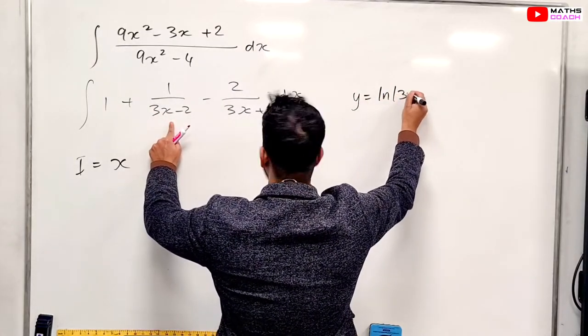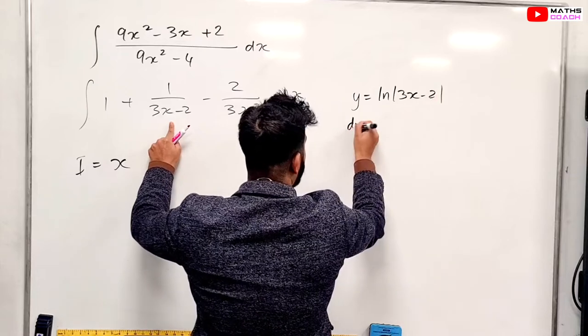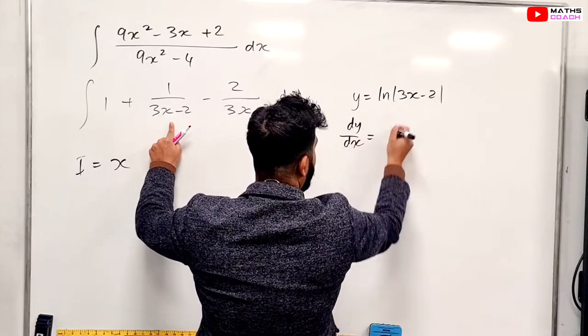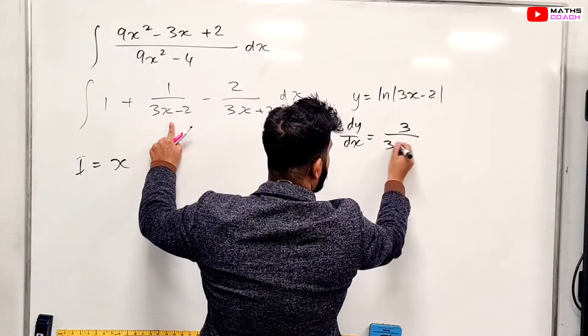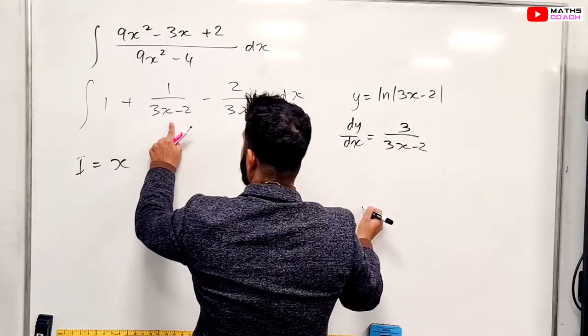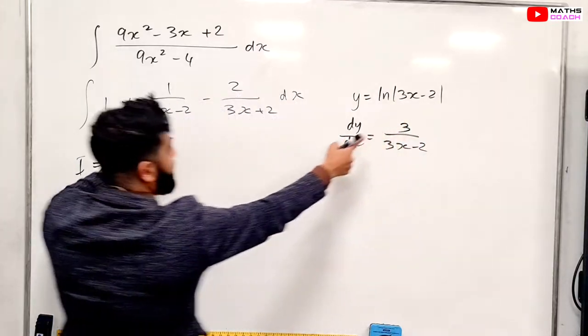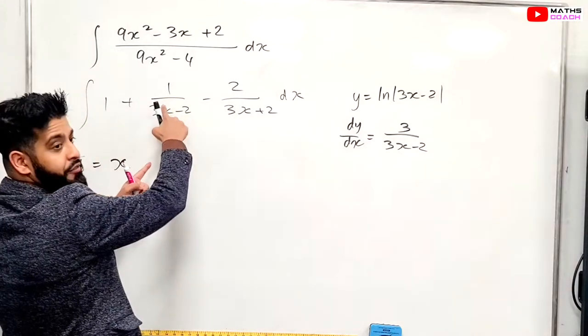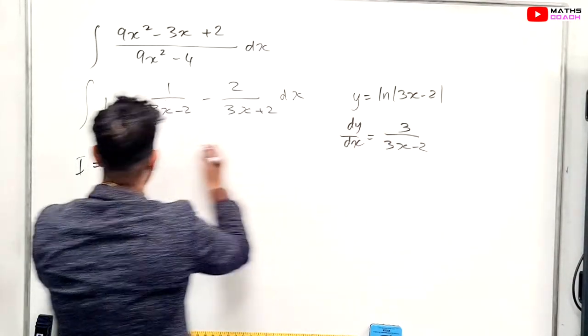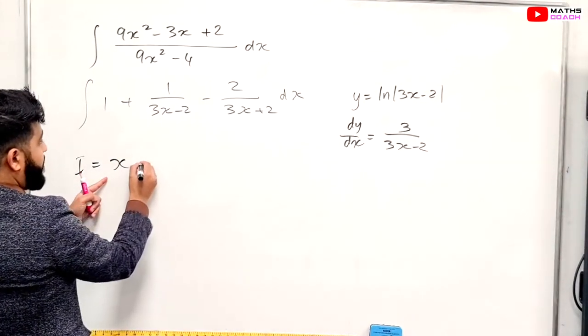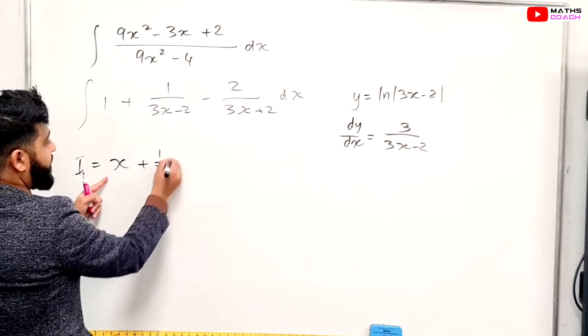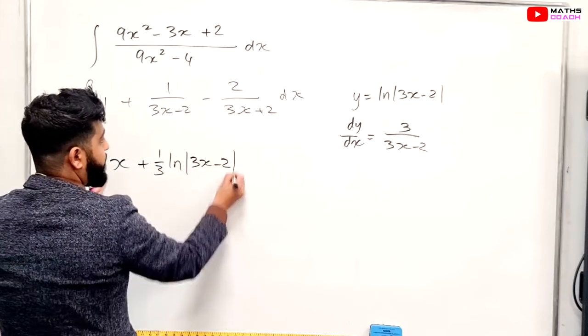So ln 3x minus 2. So dy over dx. What do we get? We're going to differentiate this. So we get 3 over 3x minus 2. So we don't want that 3 there, do we? We need to divide by 3. So therefore, this is going to be divided by 3. So we're going to get here plus a third ln 3x minus 2.